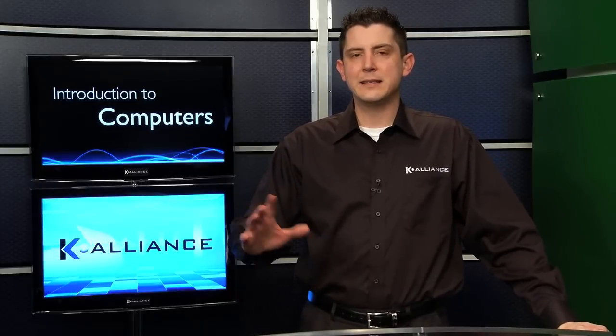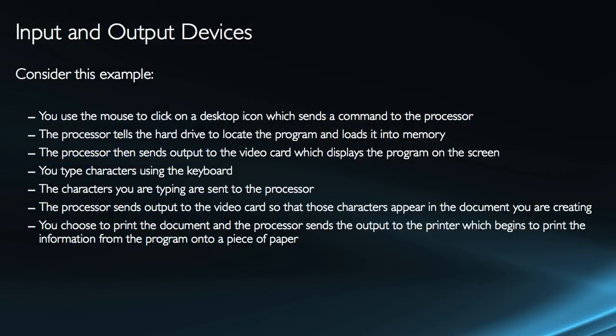Basically, all a printer does is take what was on the screen — in a certain program or just the entire screen — and send it so that it can be put on a piece of paper. So instead of just looking at the monitor, I want to put it on a piece of paper, so I send it to the printer.